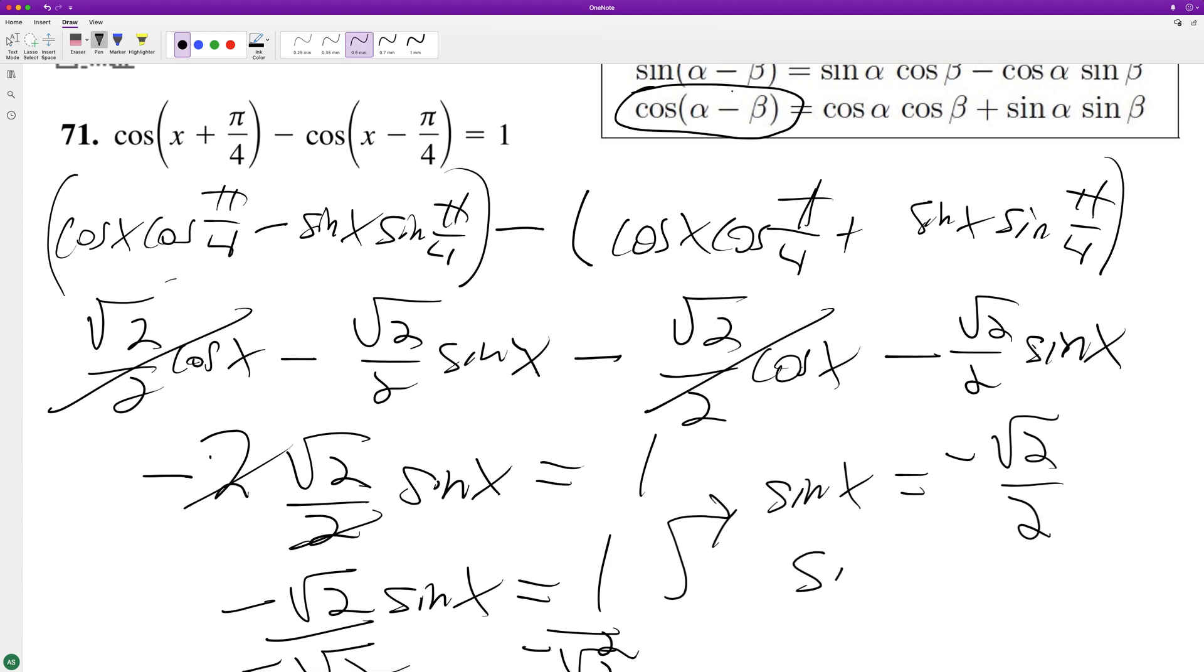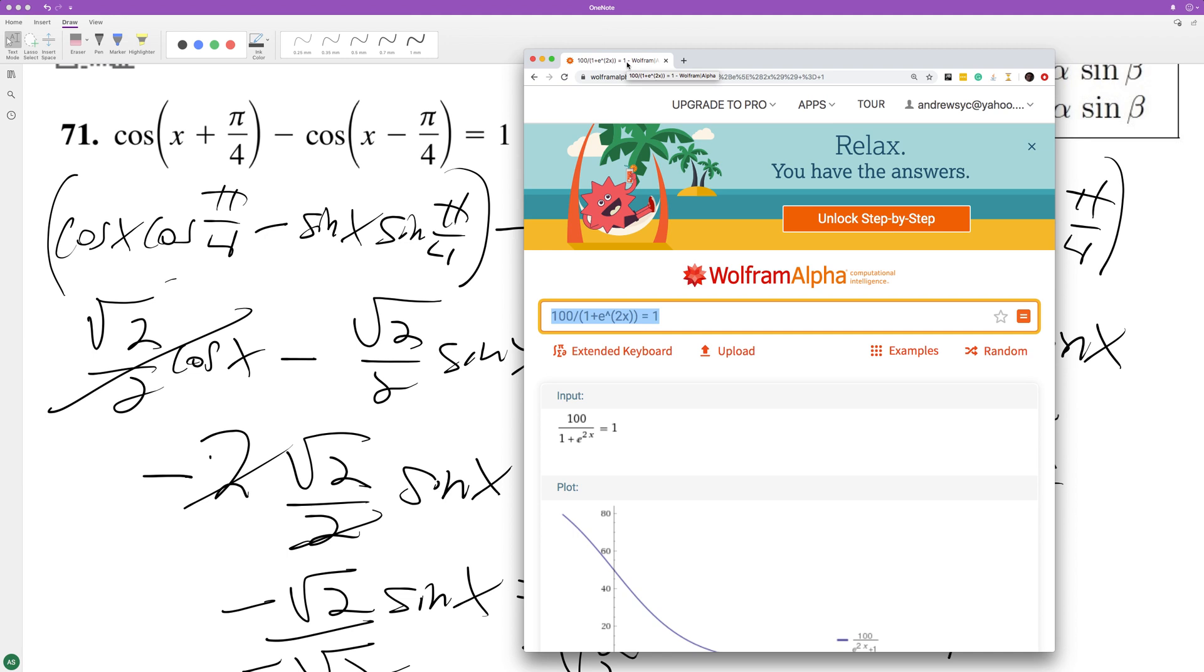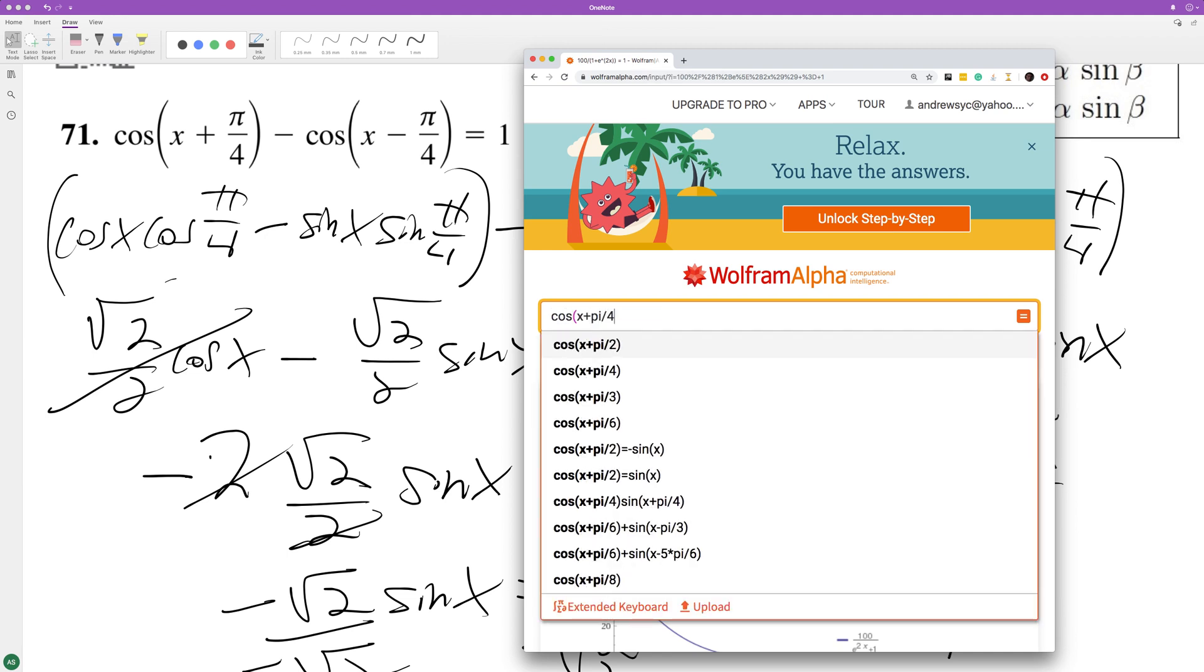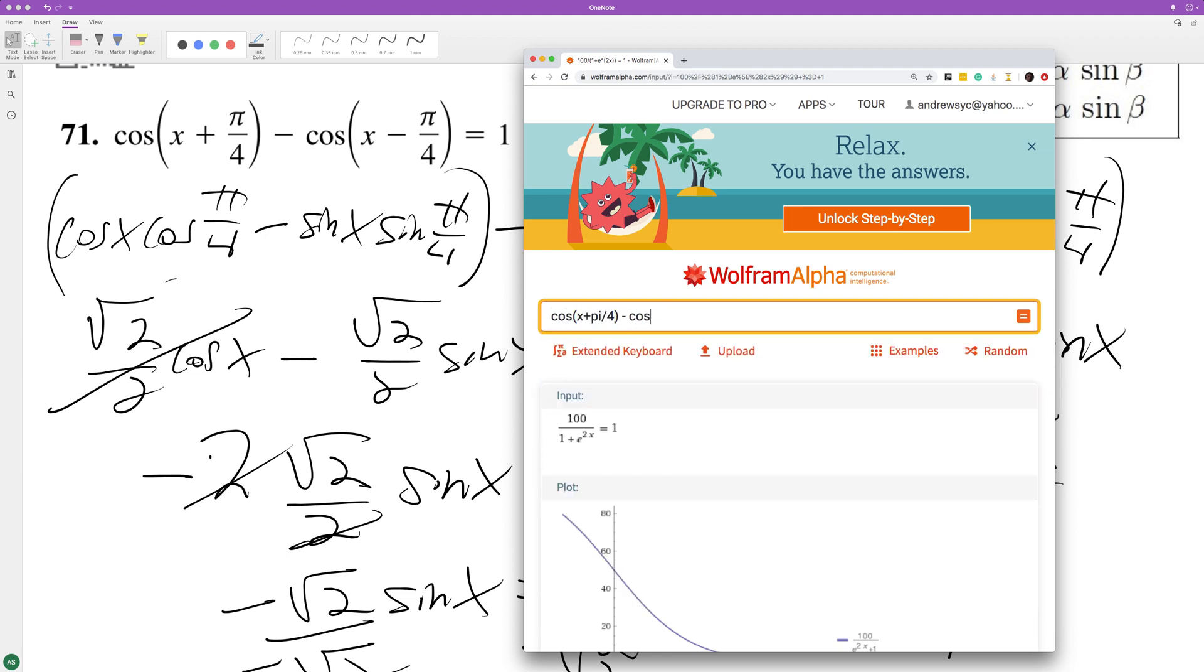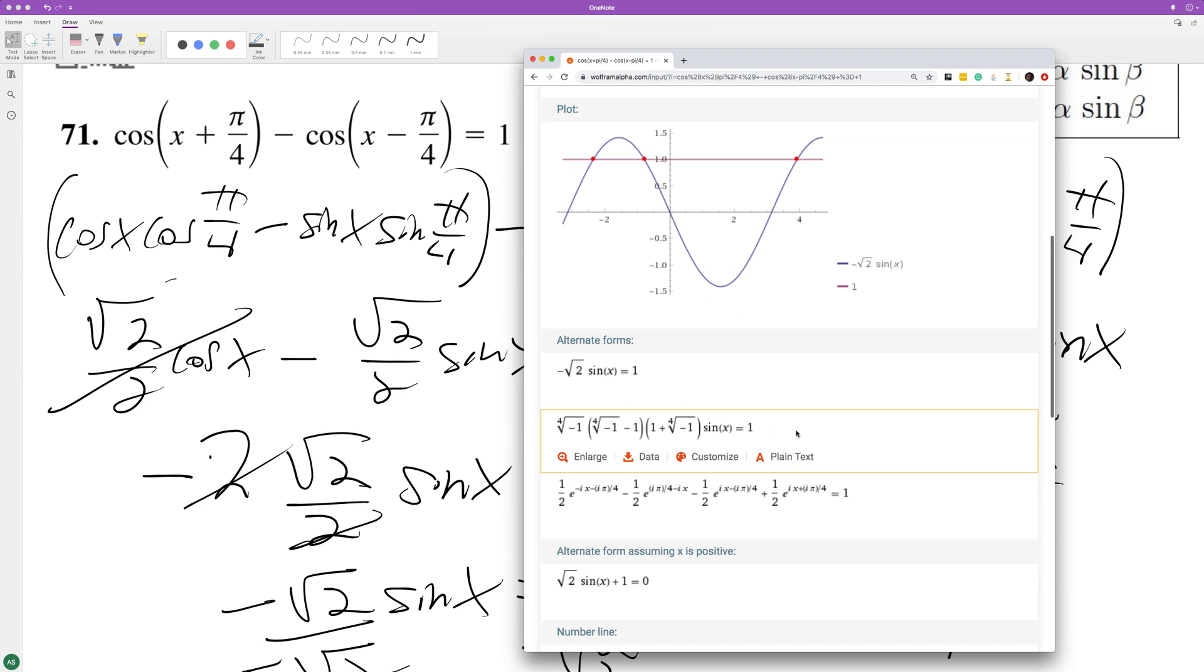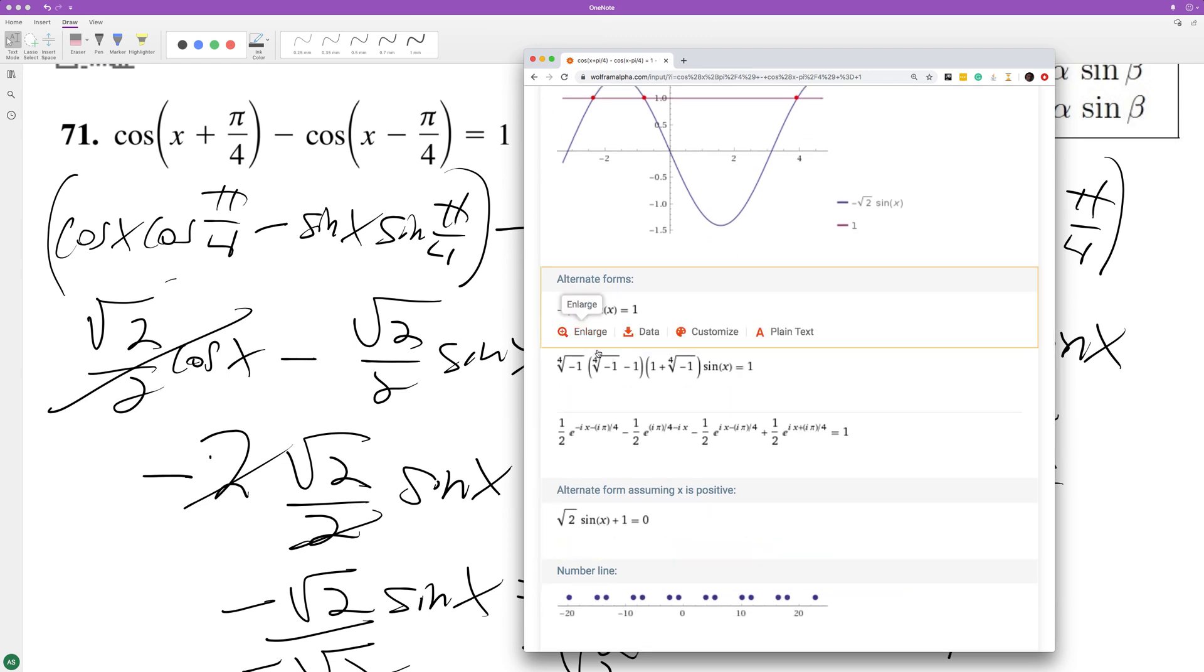So it looks like 5 pi over 4 and 7 pi over 4. But let me check this really quick. Let's check ourselves. This is going to be embarrassing if I don't get it right. So I got that right.